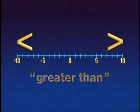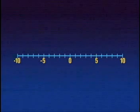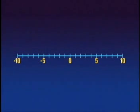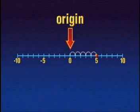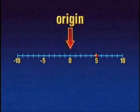You can graph integers on a number line by drawing a dot. For example, let's graph 5 on the number line — start at the origin and move 5 spaces to the right. Now let's graph negative 3: start again at the origin and move 3 spaces to the left.